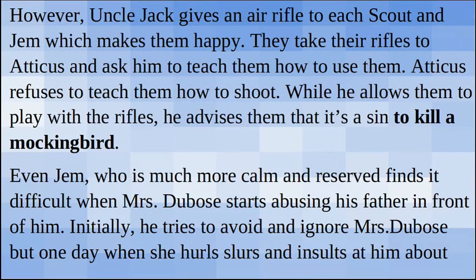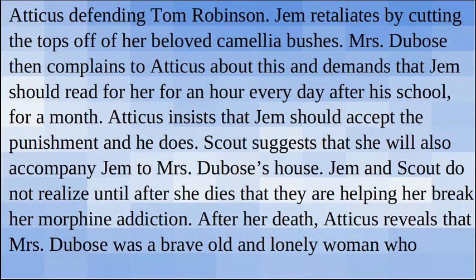However, Uncle Jack gives an air rifle to each of Scout and Jem, which makes them happy. They take their rifles to Atticus and ask him to teach them how to use them. Atticus refuses to teach them how to shoot, but while he allows them to play with the rifles, he advises them that it's a sin to kill a mockingbird. Even Jem, who is much more calm and reserved, finds it difficult when Mrs. Dubose starts abusing his father in front of him. One day when she hurls slurs and insults about Atticus defending Tom Robinson, Jem retaliates by cutting the top of her beloved camellia bushes. Mrs. Dubose then complains to Atticus and demands that Jem should read for her for an hour every day after school for a month. Atticus insists that Jem should accept the punishment and he does.